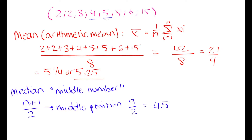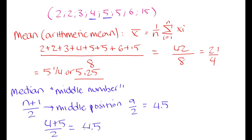When we have an even number of values, we take the arithmetic mean of the two middle numbers to find the median. The middle position of 4.5 means our median falls between the 4th and 5th numbers. Our 4th number is 4 and our 5th number is 5, so the median is (4 + 5) / 2 = 4.5. That was a coincidence that the middle position equaled the median value — but that is our median for this data set.